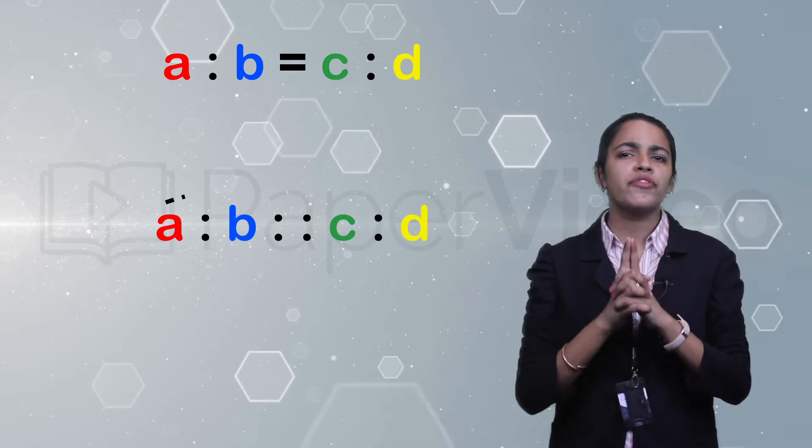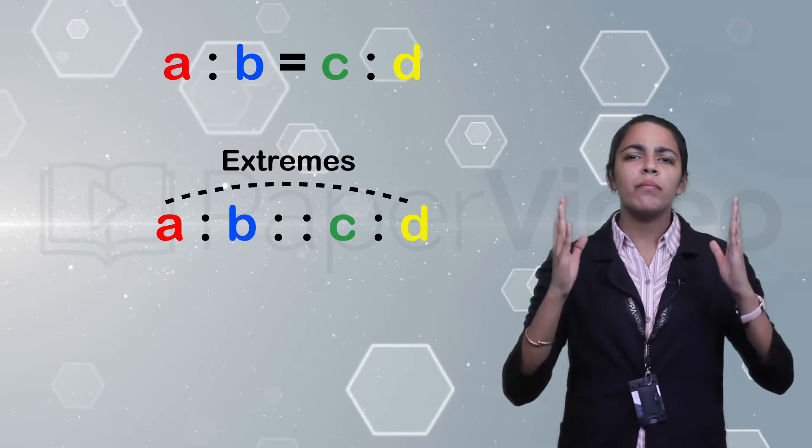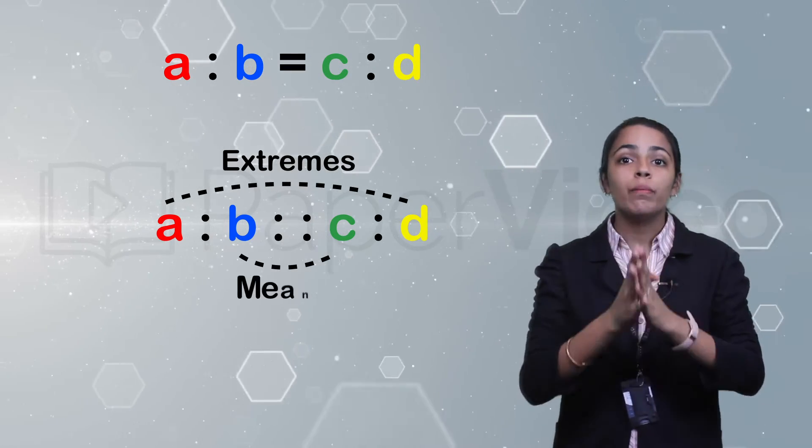In a proportion, the first and the last term are called extremes and the middle two terms are called means.